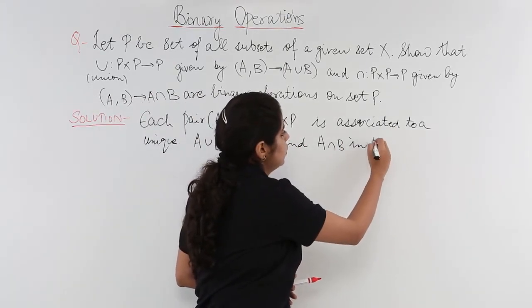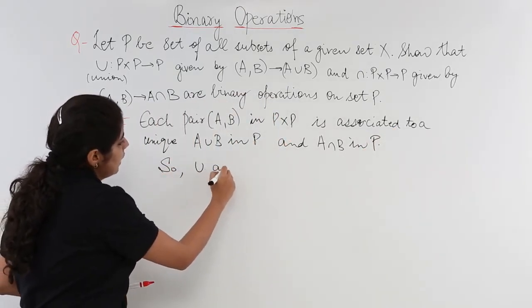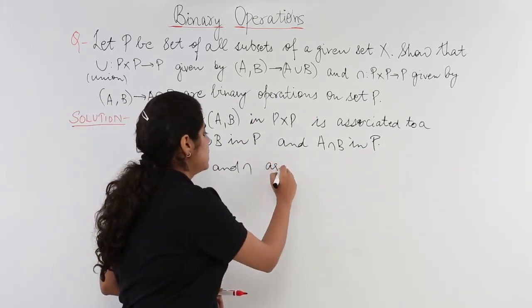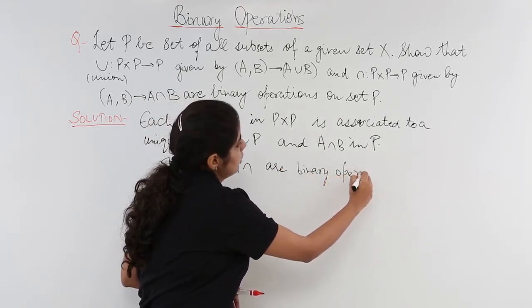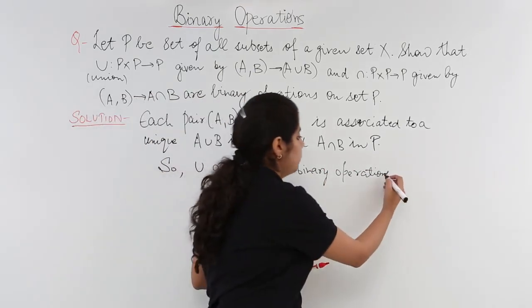So it is associated to a unique A union B and A intersection B. So union and intersection are binary operations on set P.